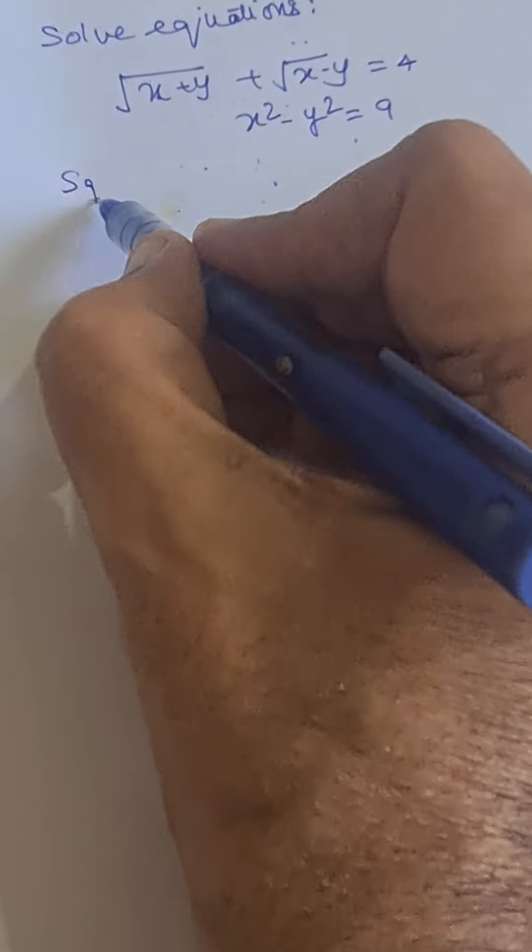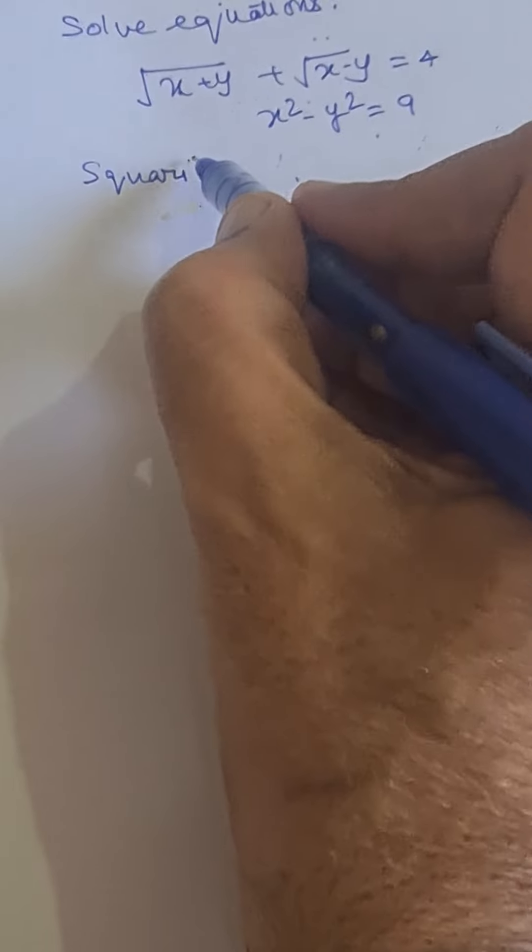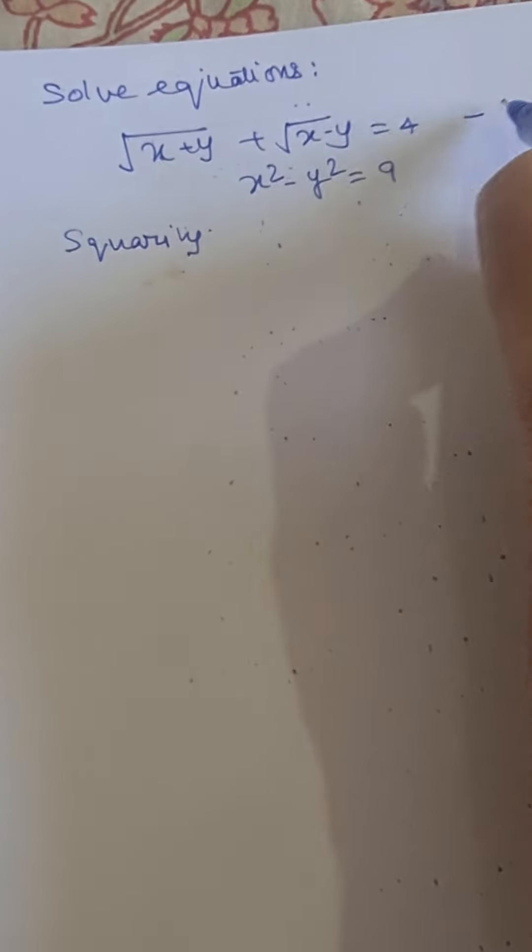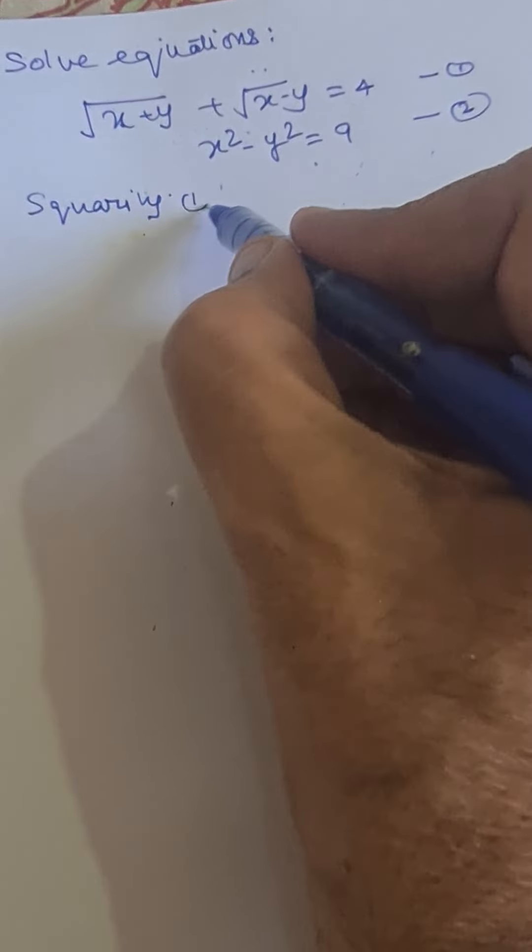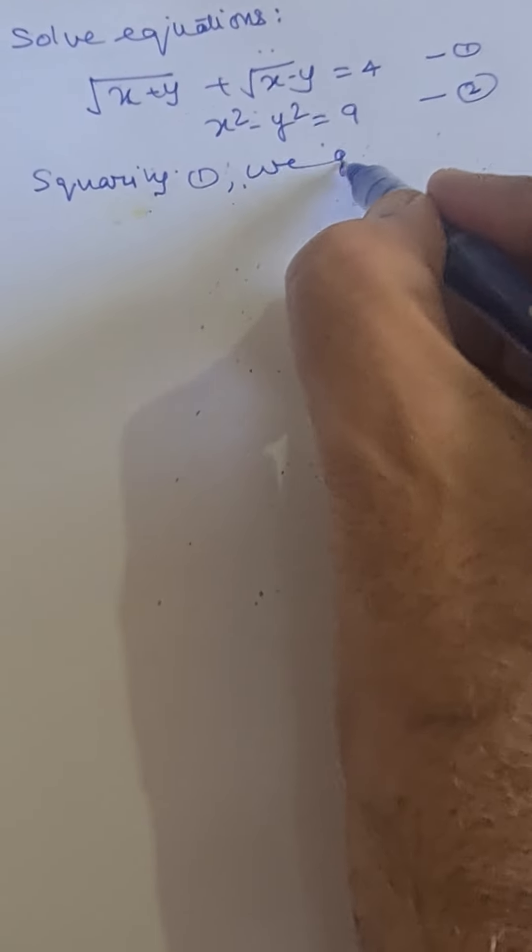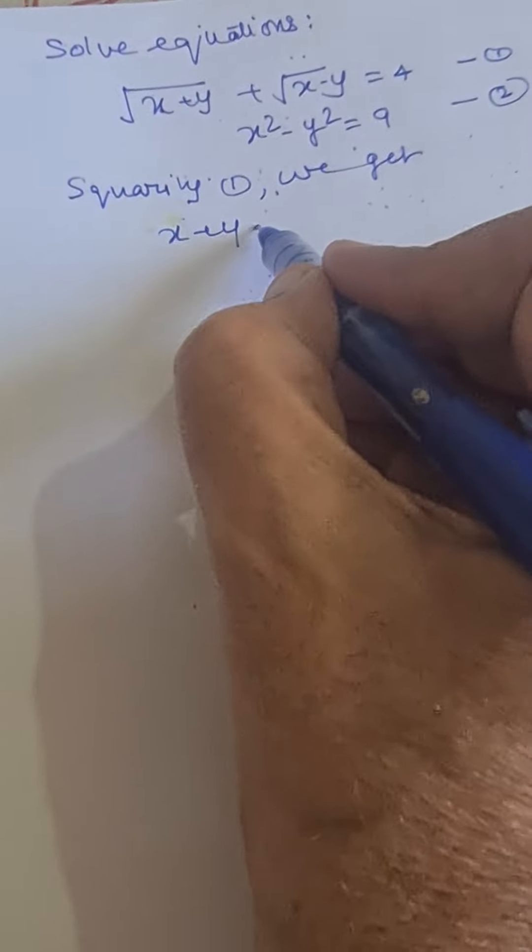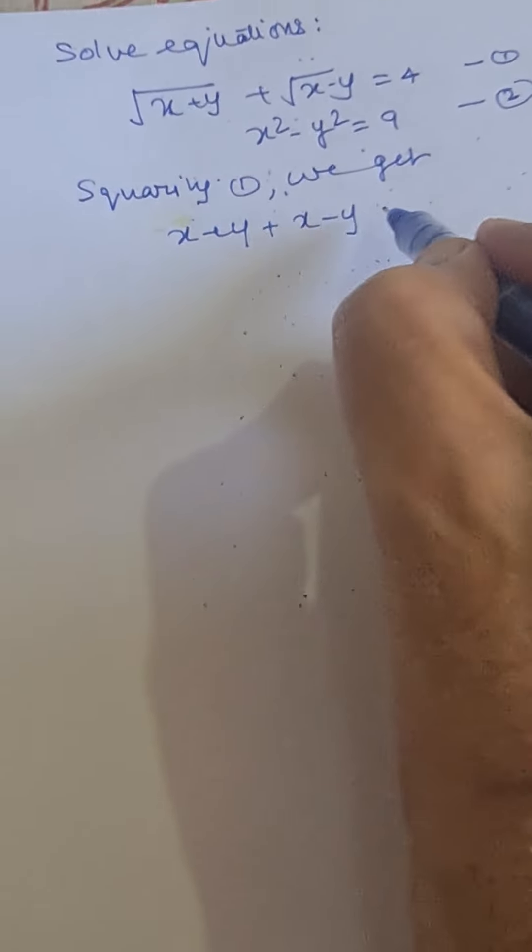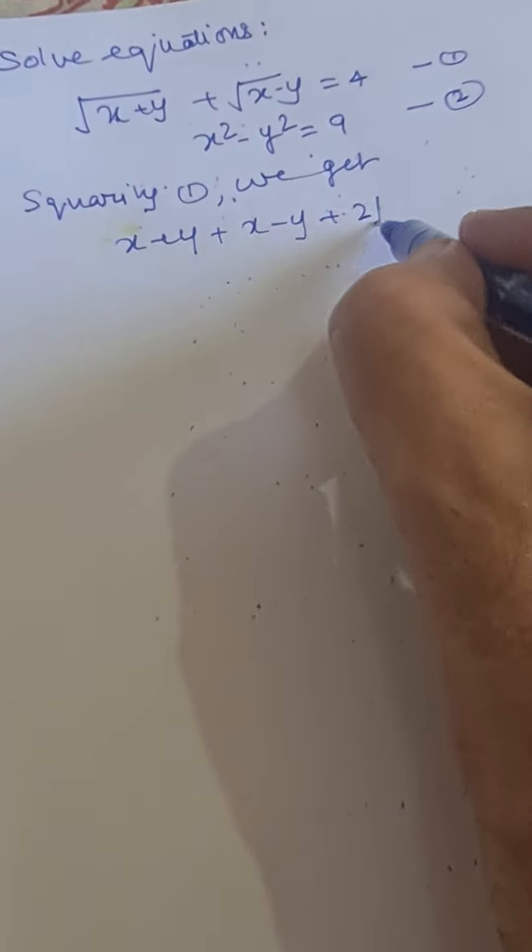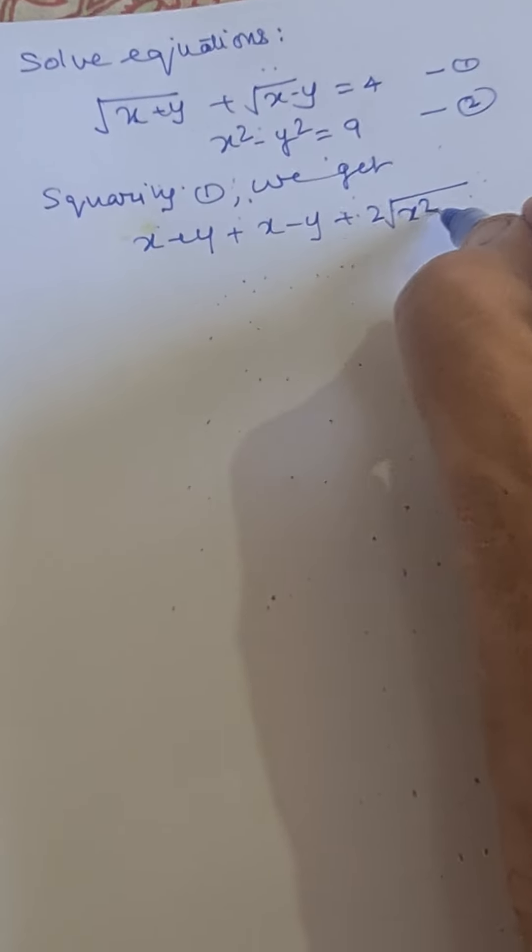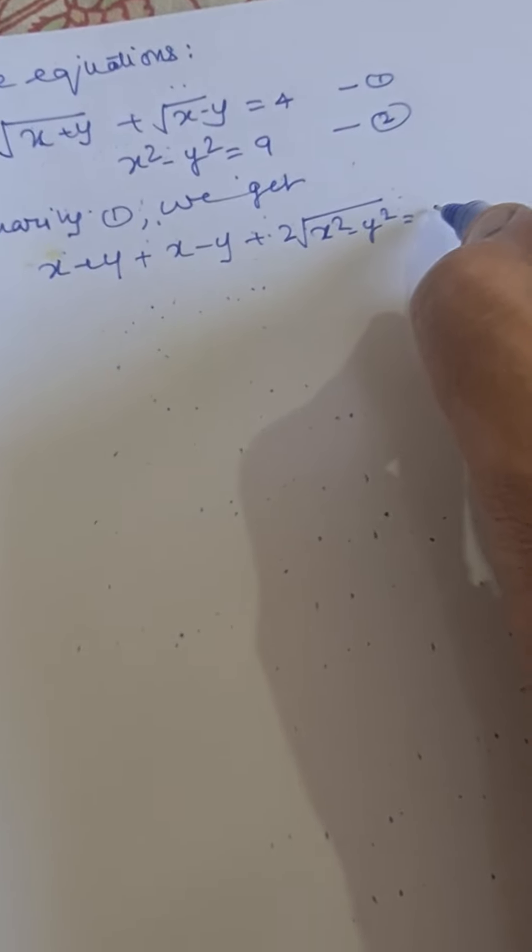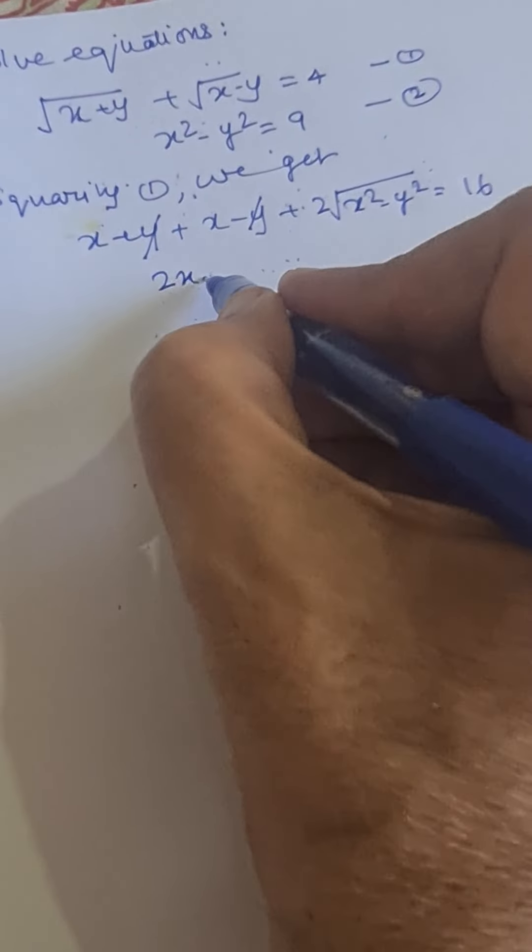Let it be equation number one, and let the second be equation number two. Squaring equation one, we get x plus y plus x minus y plus two root of x plus y times x minus y. This becomes x square minus y square equal to 16. Now this cancels with this, we are left with 2x plus 2 times square root of x square minus y square equal to 16.